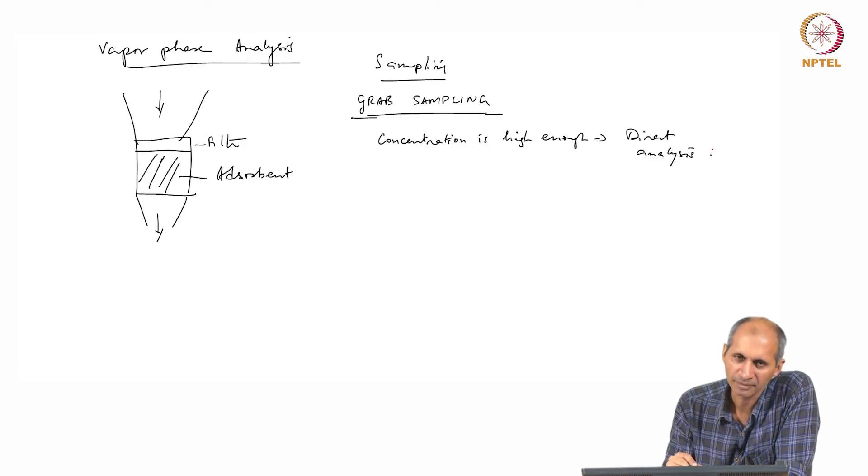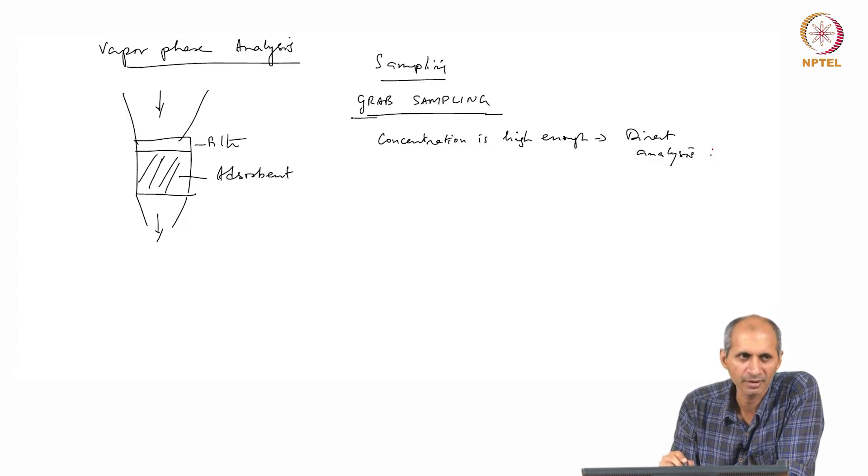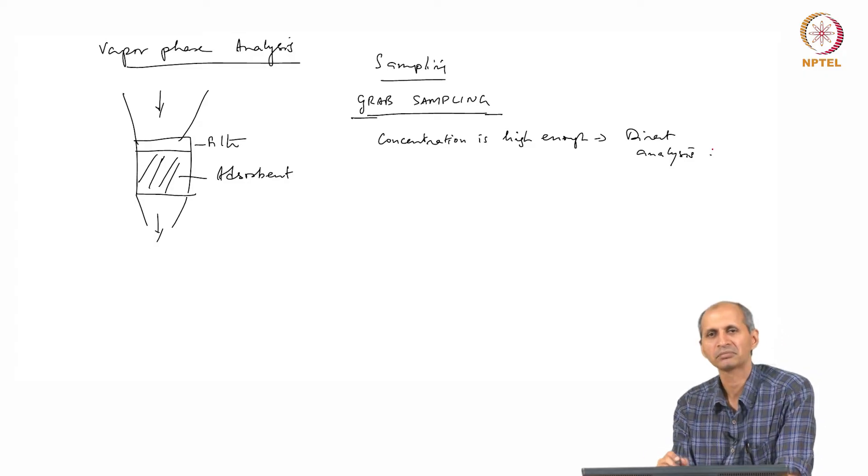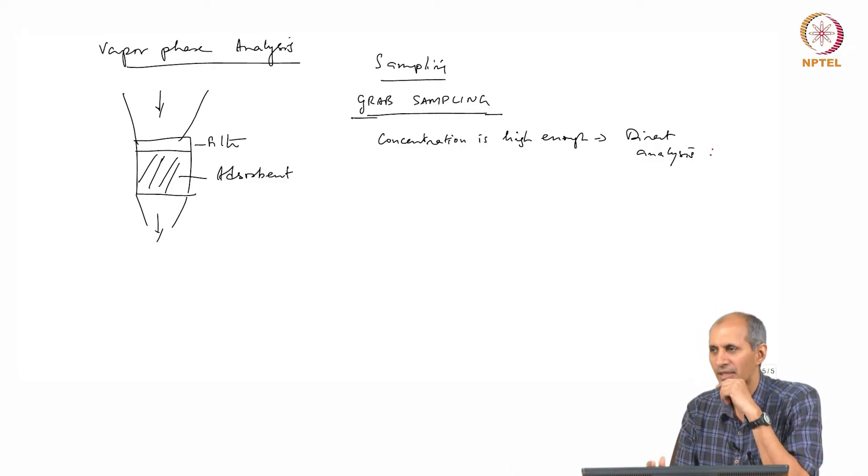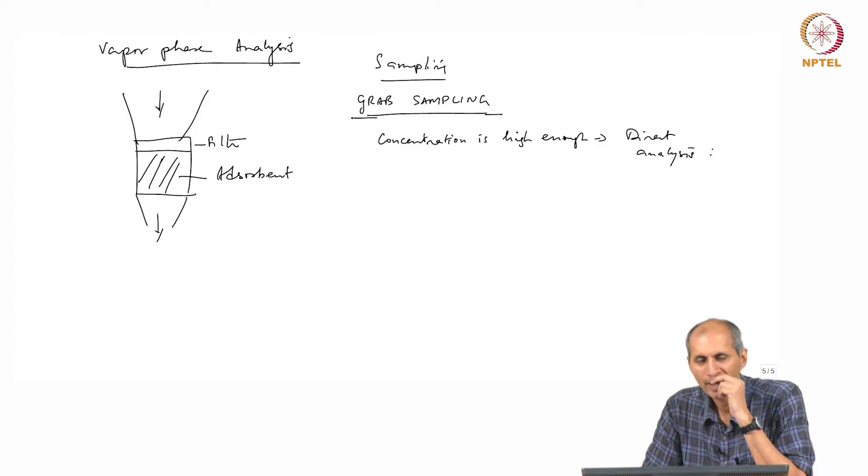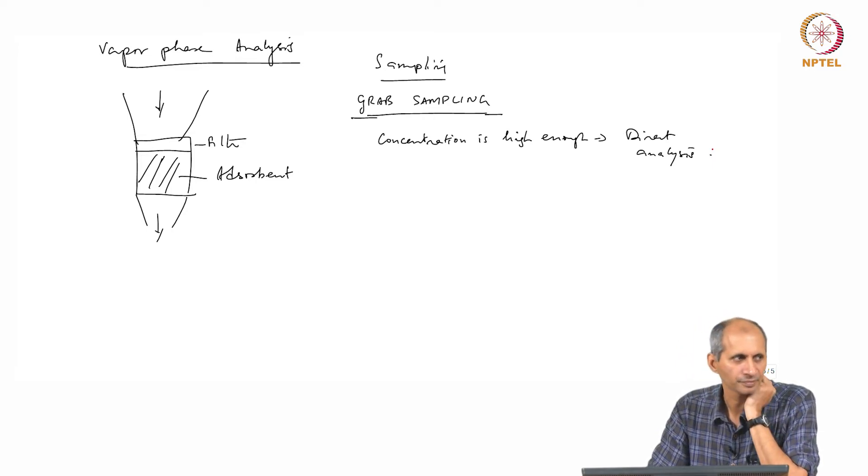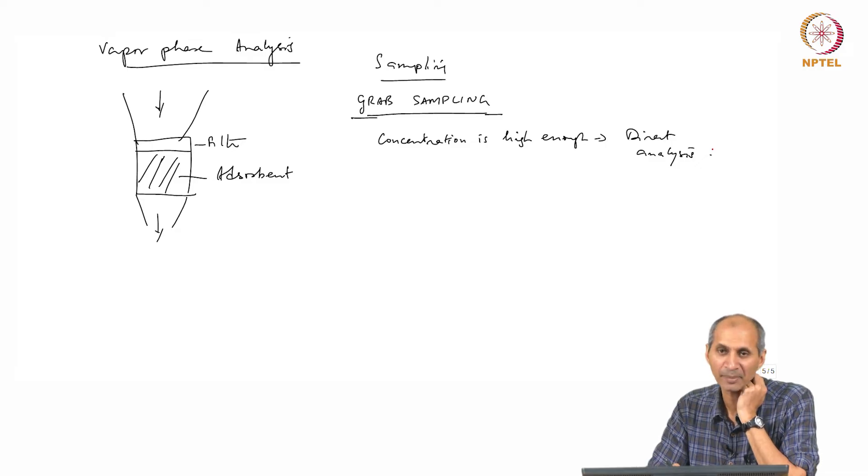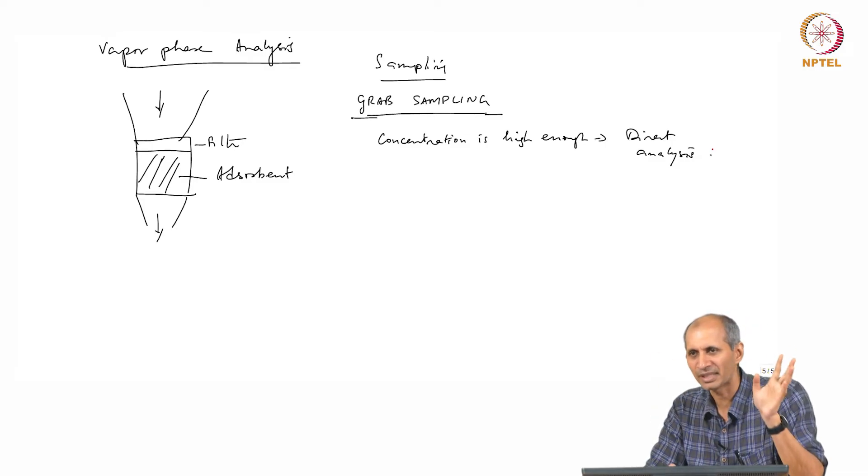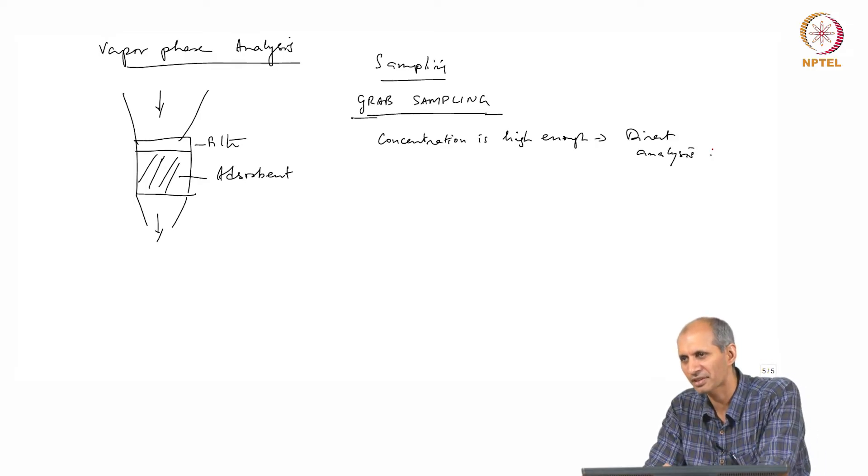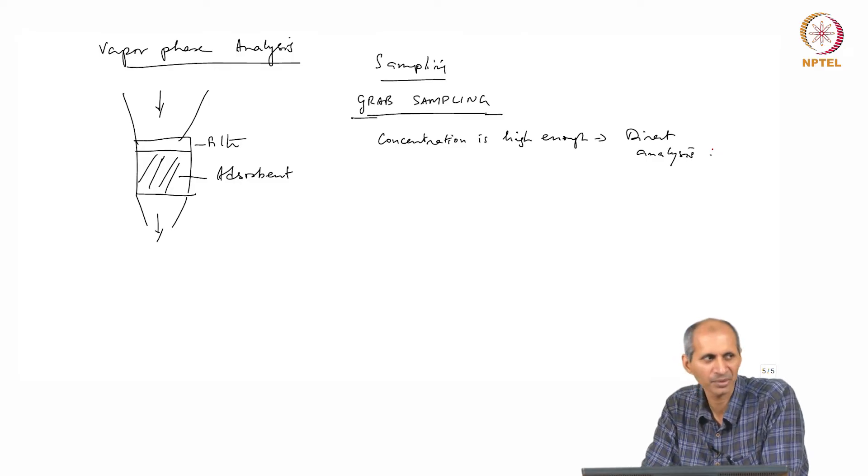Which are the possible candidates for this? A concentration of something of interest is very high and you don't even have to do any processing. Which sources are candidates for this? Where do you think you will have high concentrations? Near to a source. Very close to a source. Can you give an example? Industrial stacks. Very close to industrial chimneys.